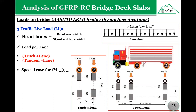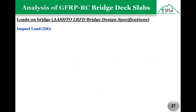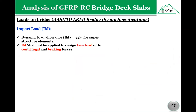There is also a special case for maximum negative bending moment in continuous bridges, which includes two trucks with maximum spacing of 15 meters. During vehicle movement on the bridge, a dynamic effect called impact load or IM can occur due to non-smooth movement. This is accounted for by increasing truck or tandem load by 33%, while this factor is ignored for lane loads.